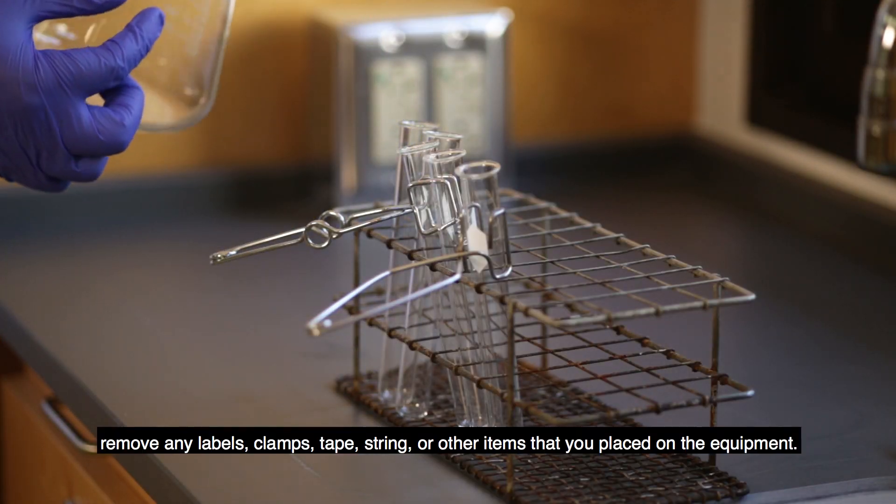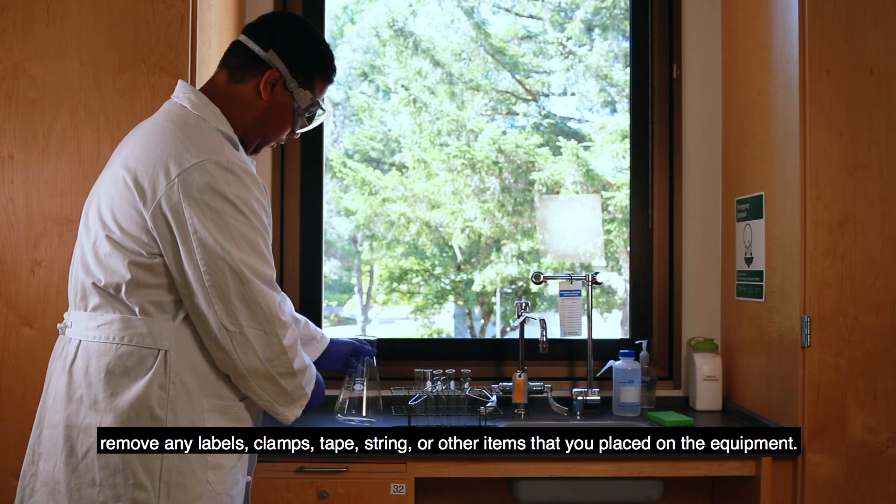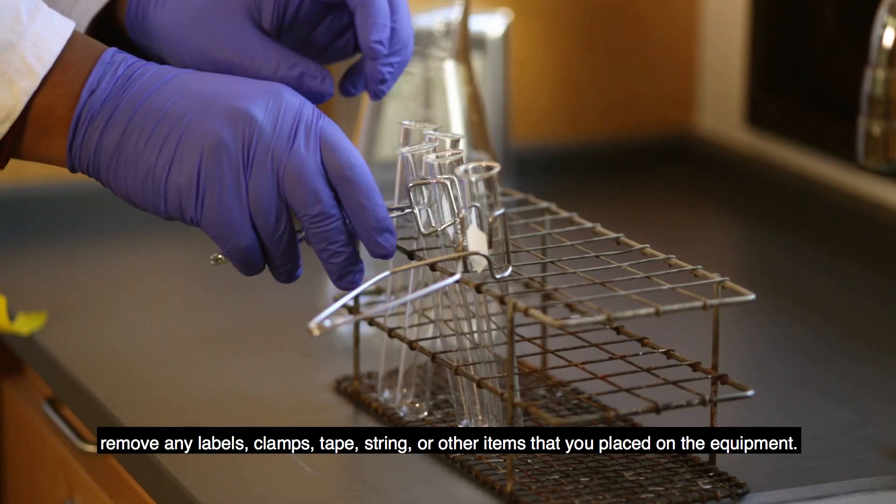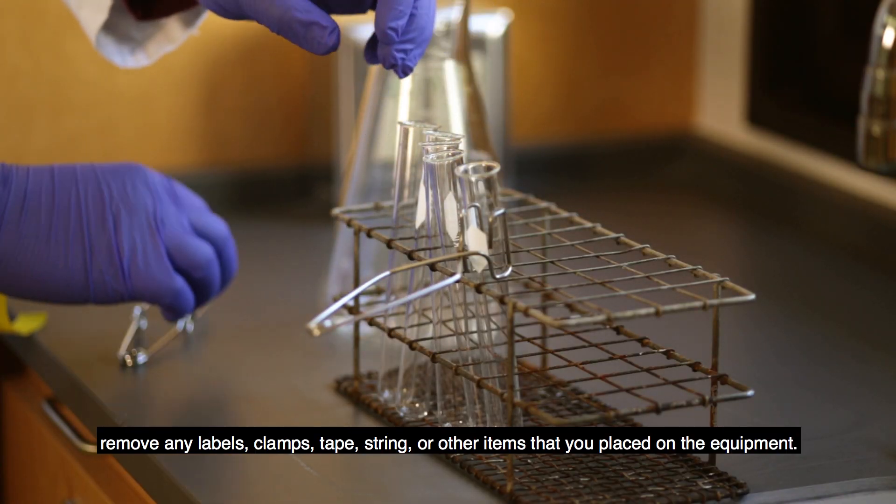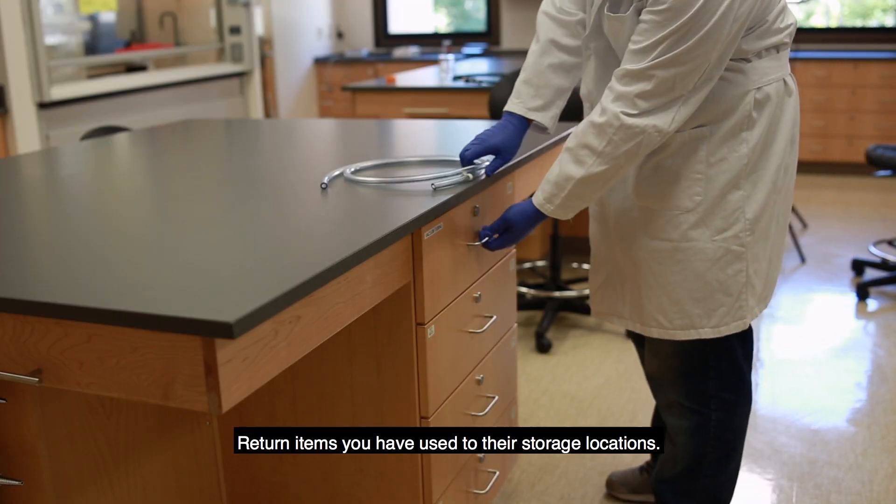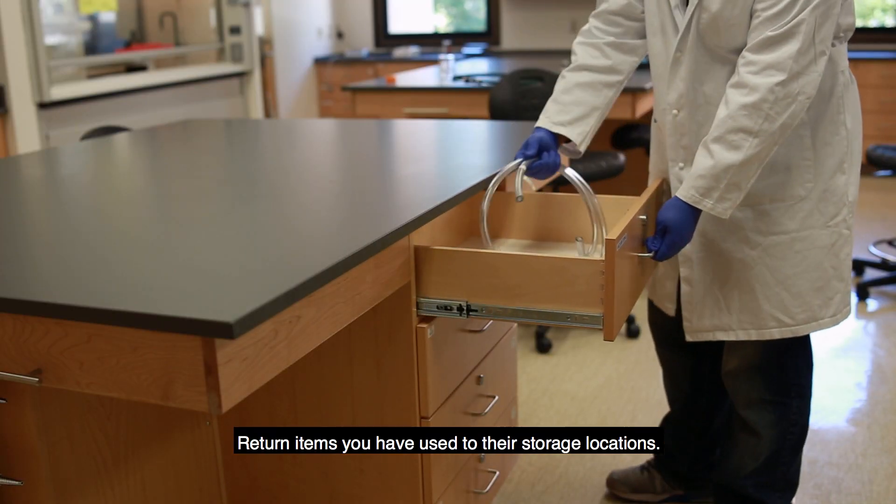Disassemble your experiment setup and leave your laboratory station as you found it. For instance, remove any labels, clamps, tape, string, or other items you have placed on the equipment. Return items that you have used to their storage locations.